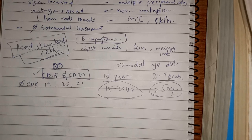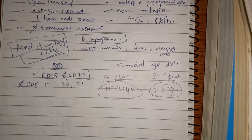Reed-Sternberg cells secrete cytokines that attract reactive lymphocytes, plasma cells, macrophages, and eosinophils, which may lead to fibrosis. These reactive inflammatory cells make up the bulk of the tumor, and on this basis Hodgkin lymphoma is divided into four subtypes.